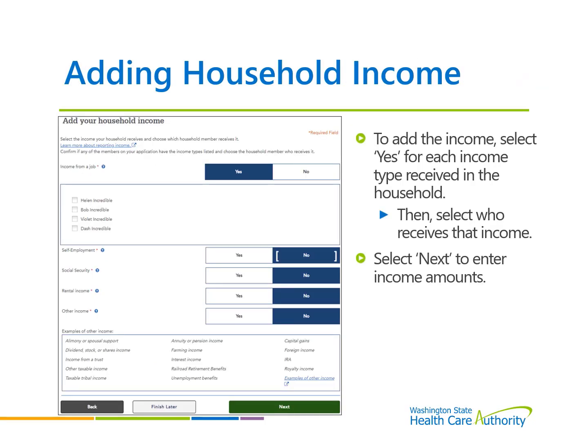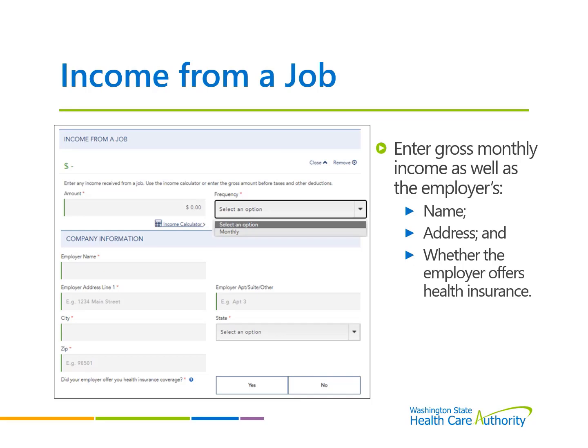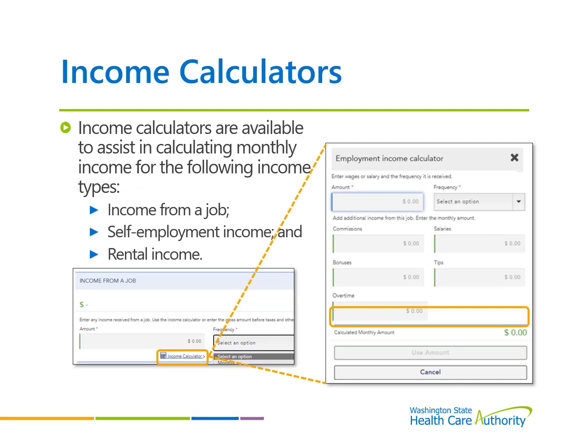Report household member's income by selecting yes to each applicable income type, then indicate who receives the income. Select Next to enter the gross monthly amounts for each income type. For those with income from a job, enter the earning member's gross monthly income, the employer's information, and whether the employer offers health insurance coverage. If the gross monthly income is unknown, use the included income calculator to determine the monthly amount. These calculators are available for three income types: income from a job, self-employment income, and rental income.